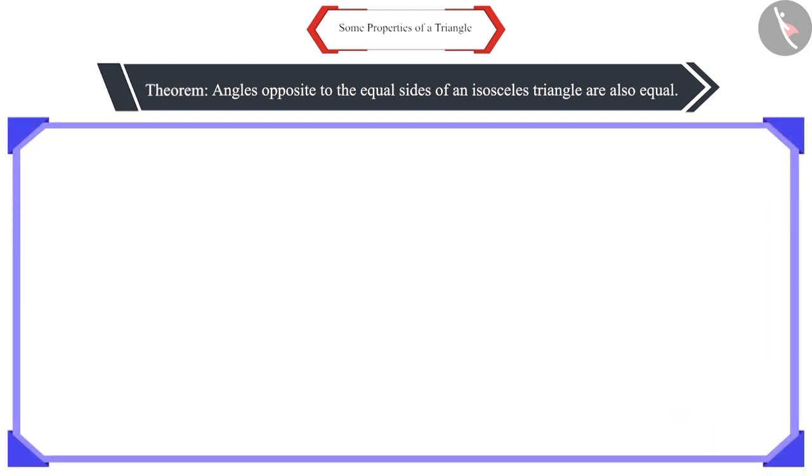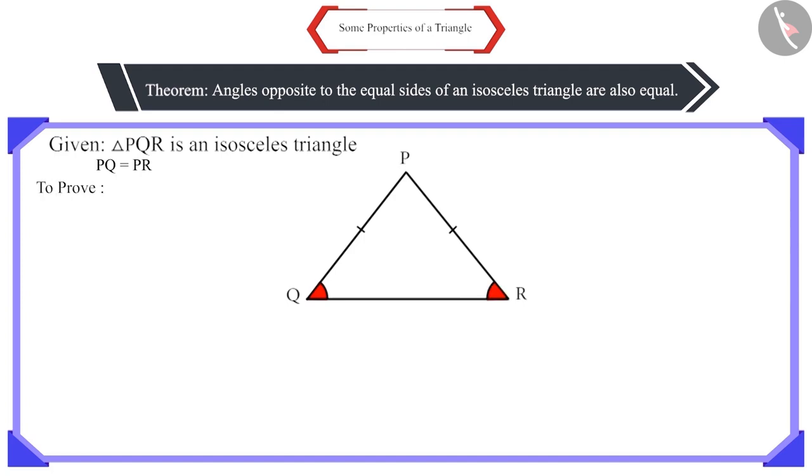With the help of this statement, let us construct another triangle. Triangle PQR is an isosceles triangle. It is given that side PQ is equal to side PR. This has been given to us. And we have to prove that angle Q is equal to angle R. Let us look at its argument.